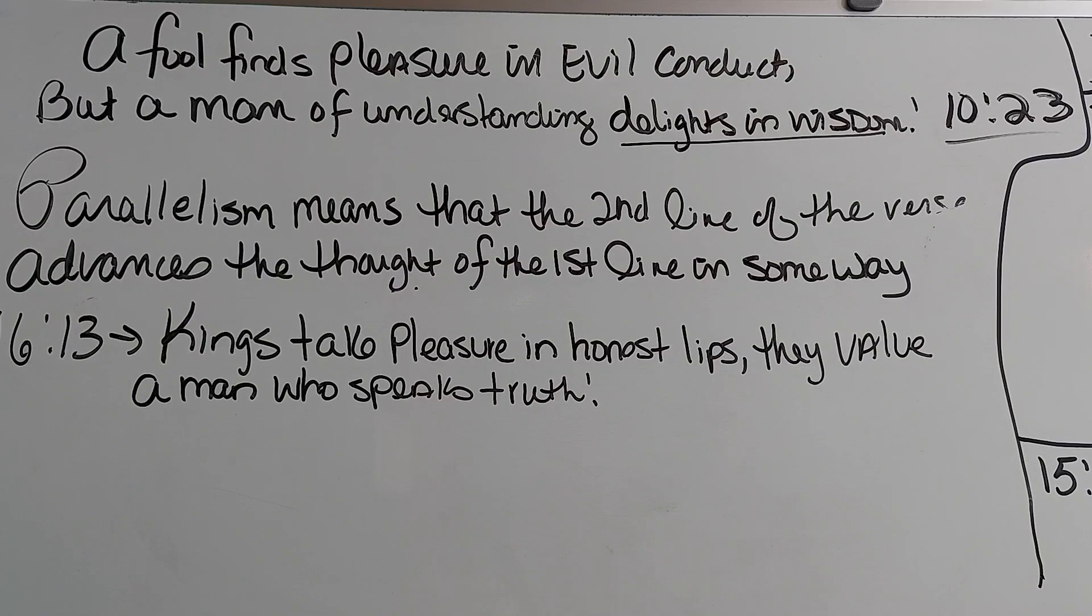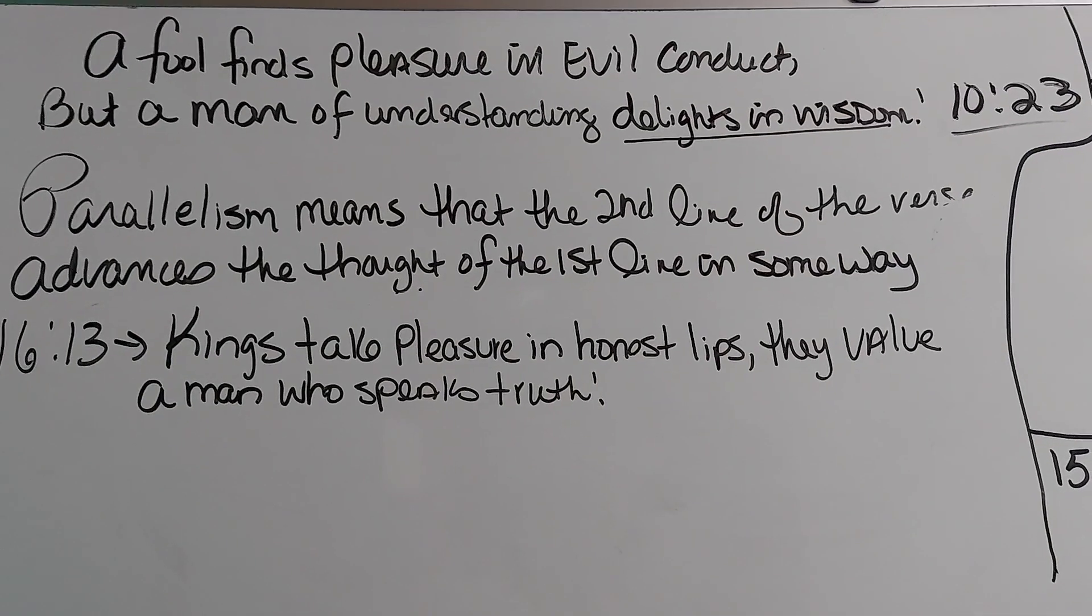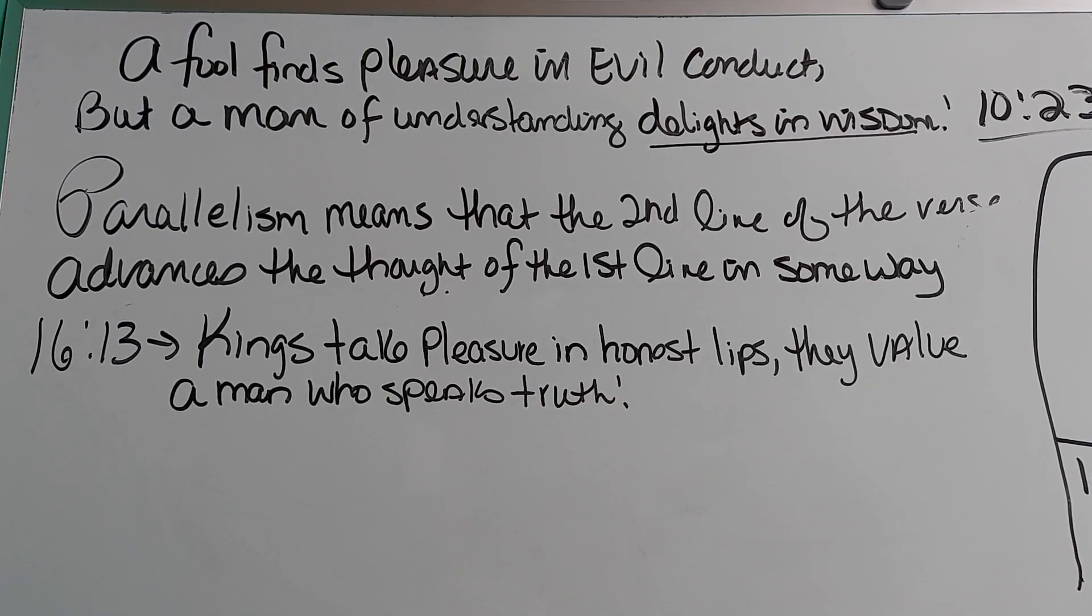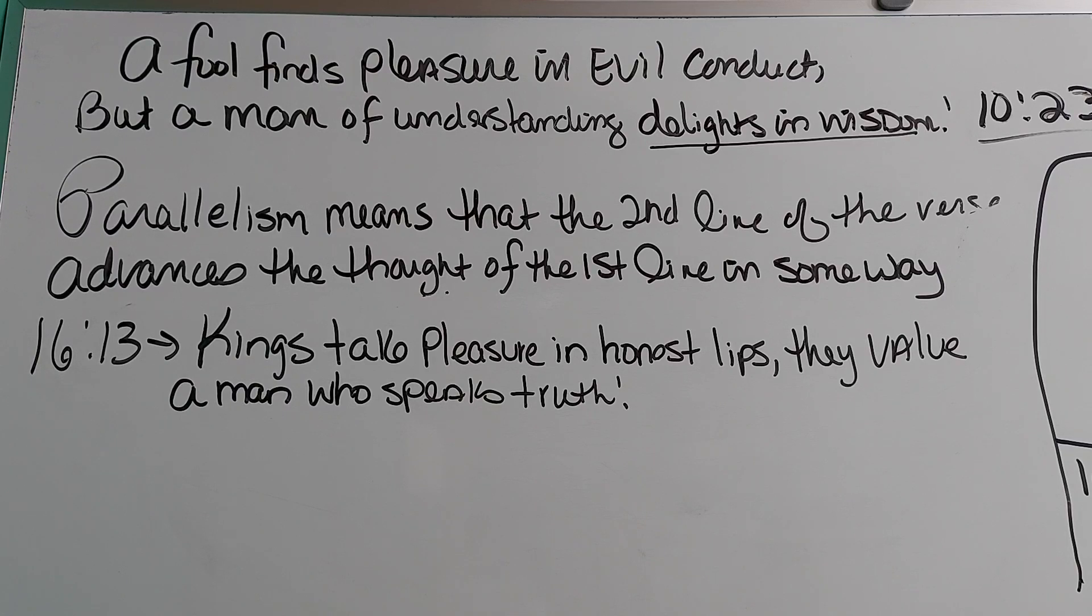Write this down. Parallelism means that the second line of the verse advances the thought of the first line in some way. So, determining how this movement occurs, it allows us to understand the sense and the meaning of the proverb. Let's start out with Proverbs 16:13. Kings take pleasure in honest lips. They value a man who speaks truth.